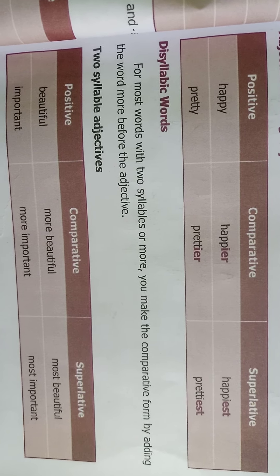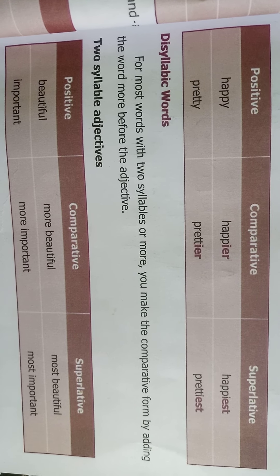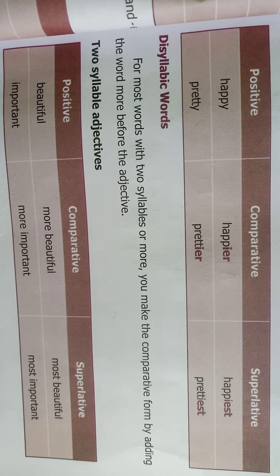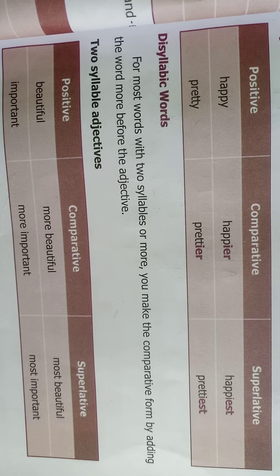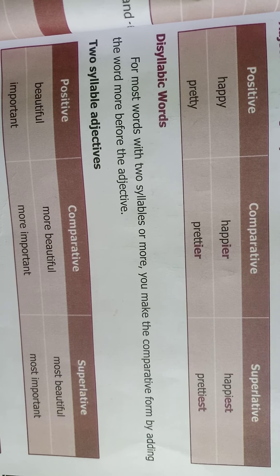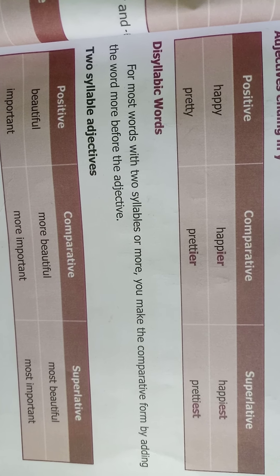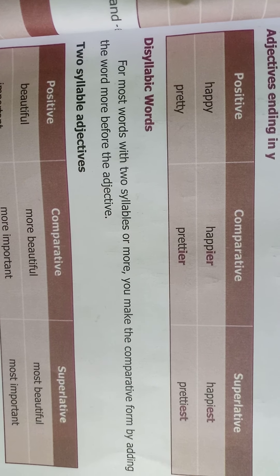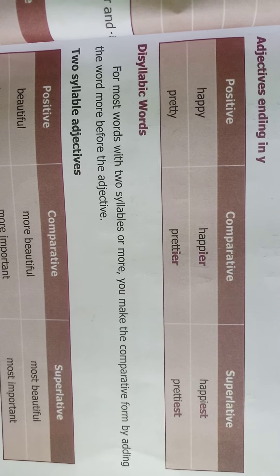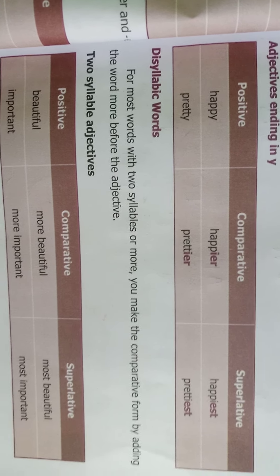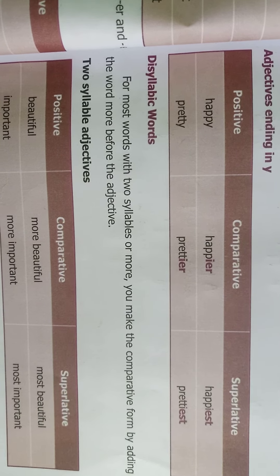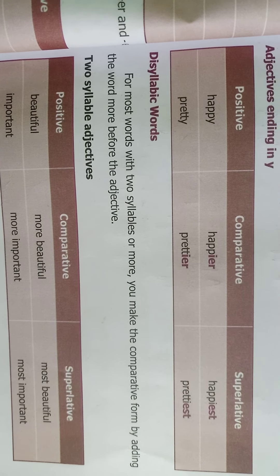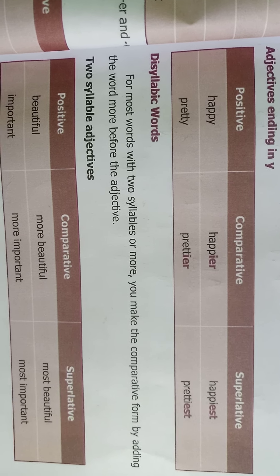That means two syllable adjectives. The positive form of the adjective is 'beautiful.' We add 'more' before 'beautiful' to make it comparative and 'most' before 'beautiful' to make it superlative. Example: beautiful, more beautiful, most beautiful. Similarly: important, more important, most important.